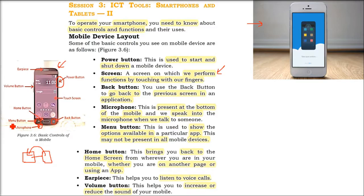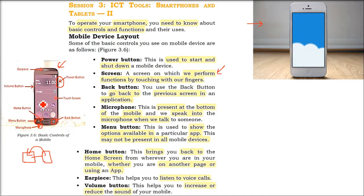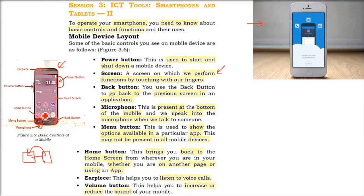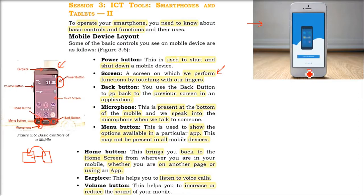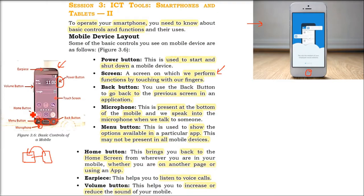Then there is a Menu button. This menu button shows all the options available — that is, all the options within an app. It may not be present in all mobiles. Then in the middle you have the Home button. This brings you back to the home screen, wherever you are.